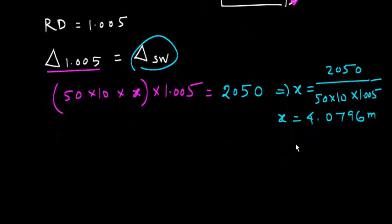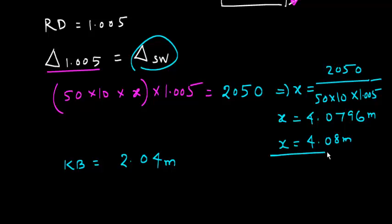Just let me go a little bit. We can round off and we can write it as 4.08 meters. So now KB is going to be 2.04 meters, half of this. All you have to do is just divide by 2. So we get KB. Now, the value of LCB again is 50 divided by 2, that is 25 meters.